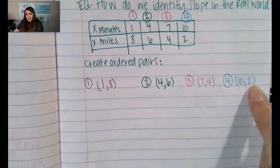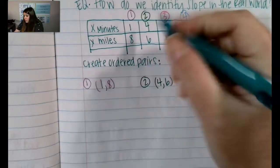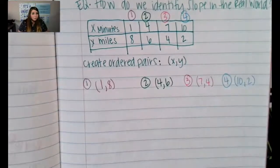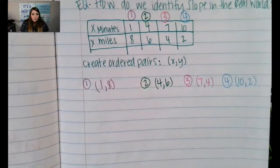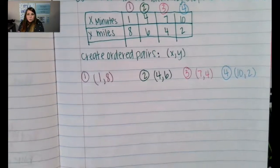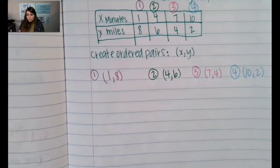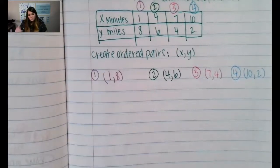So our x value is ten, our y value is two. When we create ordered pairs we use the x value first and then the y value. Now we're going to apply all of our learning from the last couple of lessons on slope, using these pairs to find the slope. When we were looking at how to solve for slope using ordered pairs, we used point two and point one and their x and y values.